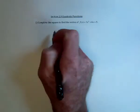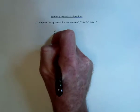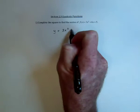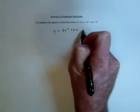The first problem for quadratic functions is to complete the square in order to find the vertex of this function. I'll begin by replacing f of x with a y. So we've got y equals 3x squared plus 6x plus 5.